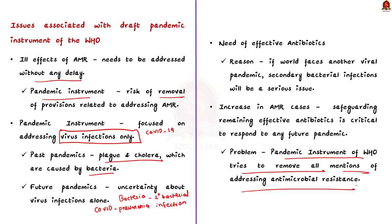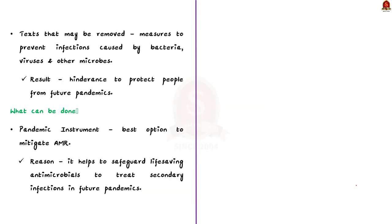The sections of the text which may be removed include the measures to prevent infections caused by bacteria, viruses, and other microbes. Therefore, the exclusion of these matters would hinder the efforts to protect people from future pandemics. These are all the issues associated with the draft pandemic instrument.